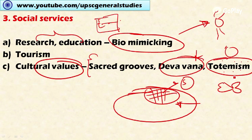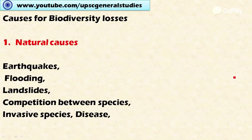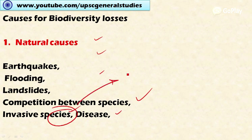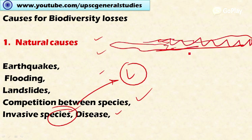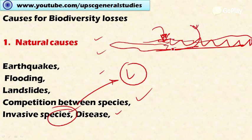Next are the causes for loss of biodiversity. Natural causes include earthquakes, flooding, landslides, competition between species, invasive species, and diseases. For example, Lantana camara is a shrub that forms a complete mat on the soil surface, preventing other plants from growing. Herbivores like rabbits and deer cannot eat these shrubs and die from starvation, causing carnivores like tigers, leopards, and lions to also suffer due to shortage of food.